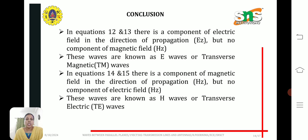In equations 14 and 15, there is a component of magnetic field in the direction of propagation, but no component of electric field. These waves are known as H waves or Transverse Electric waves.